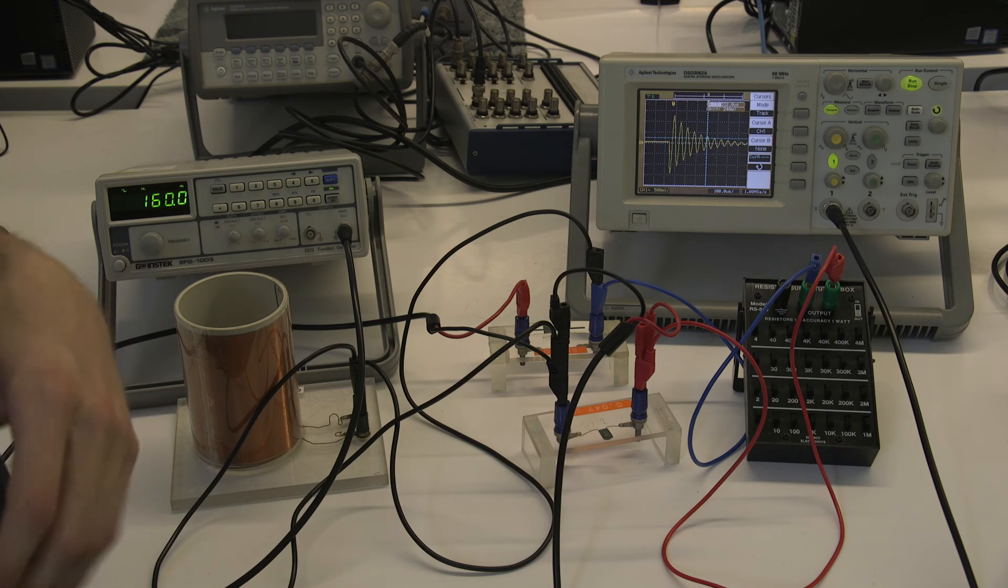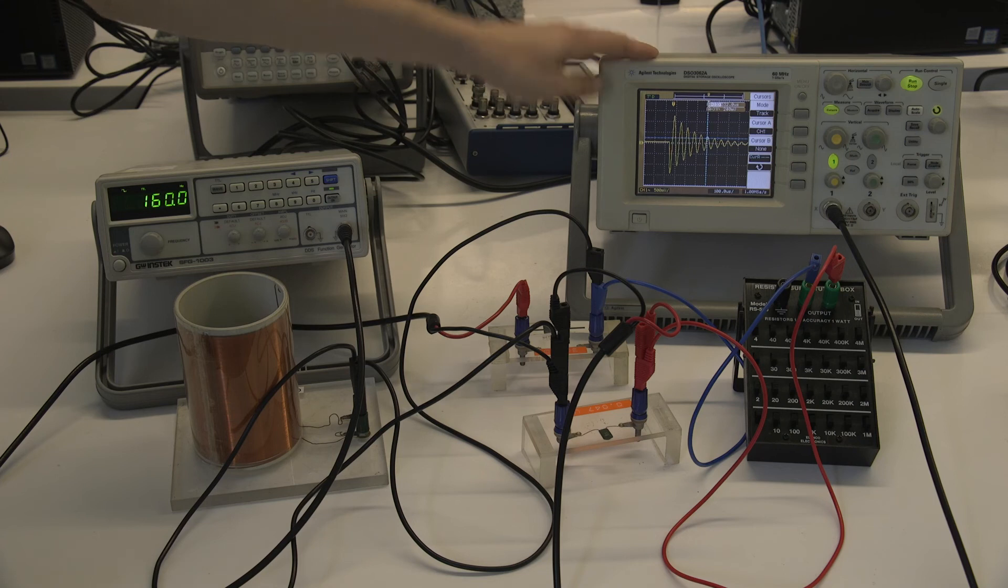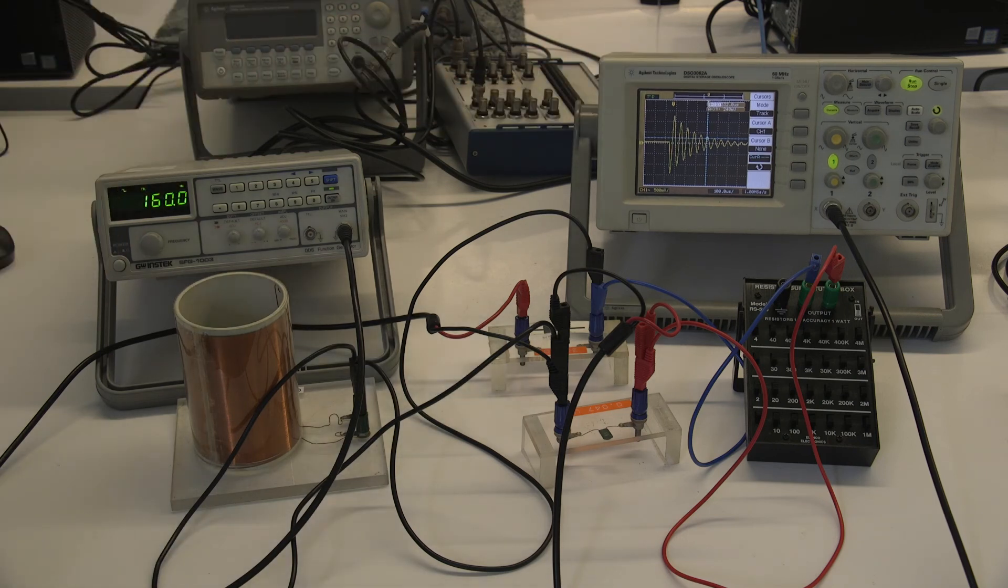The other thing you're going to be doing in the second part of the experiment is rather than just using an oscilloscope, you're also going to use one or a pair of multimeters to measure the voltage or current at different points of the circuit.